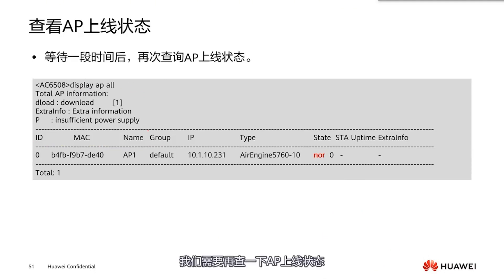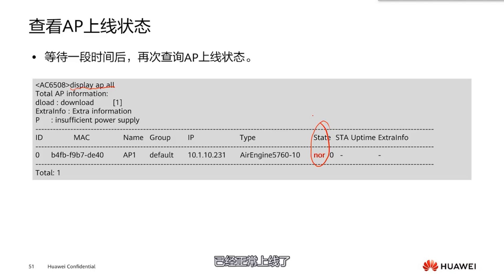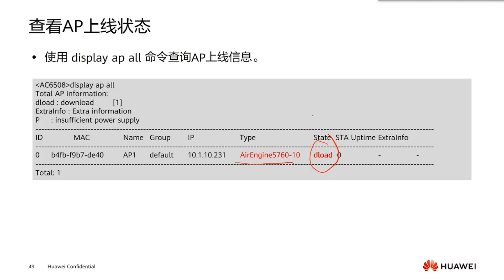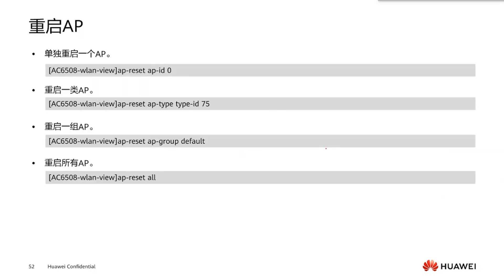After the upgrade is finished, we need to check the online status of the AP again using 'display AP all' to confirm it is normal. The state has changed to 'NOR', which means normal, indicating that the AP upgrade is complete and it is now online. Previously during the upgrade the state was 'download', but it has now changed to 'normal', indicating success.